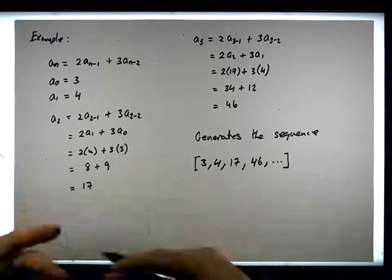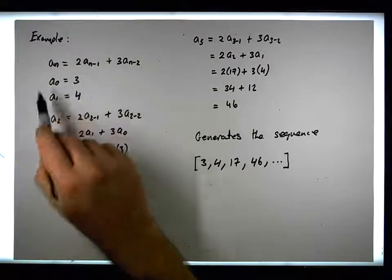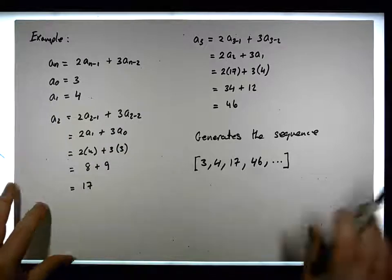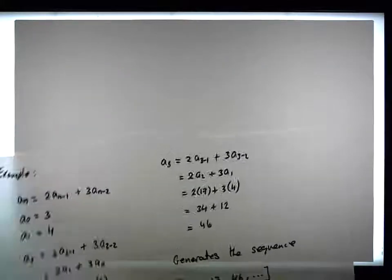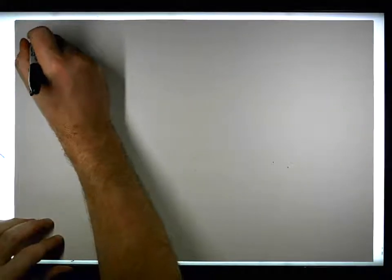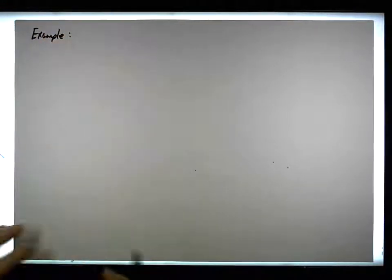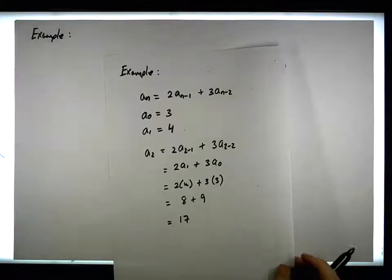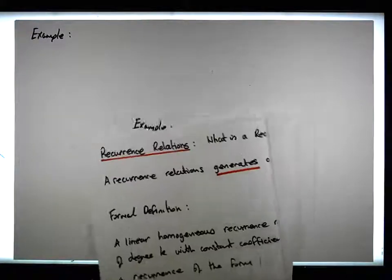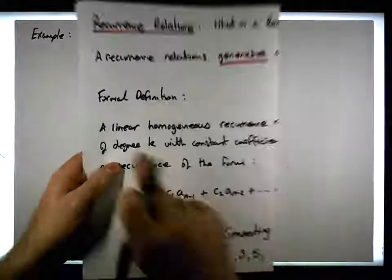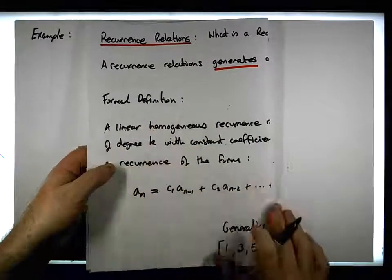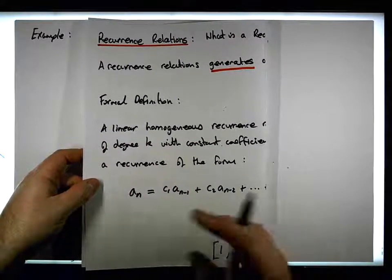So you can see that these recurrence relations allow us to generate particular sequences. Let's have a look at another one. I'm not defining these to be of a particular form yet — I'm not saying that these are linear homogeneous recurrence relations just yet. We'll define them in a moment, but we are interested in linear homogeneous recurrence relations. Let's see what some other types of recurrence relations could look like.